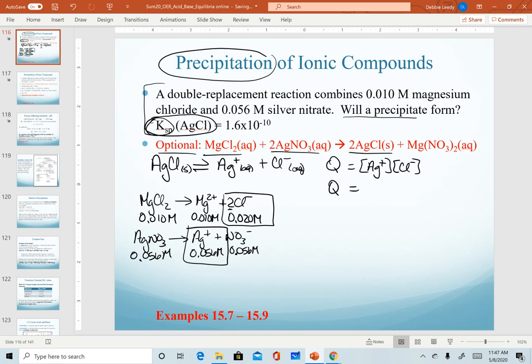Plugging into our Q expression, silver is going to be 0.056 molar. Chloride is 0.020 molar. When we plug those values in, our Q is 0.00112.